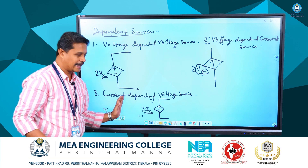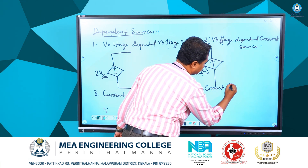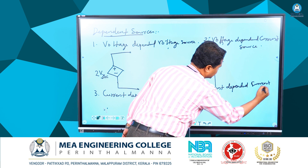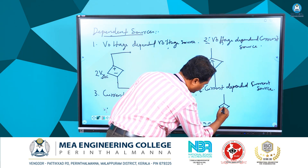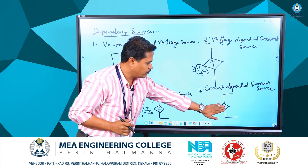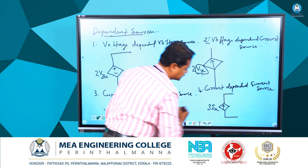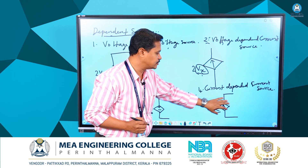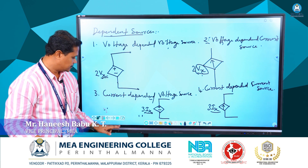The last type is a current dependent current source. It is a current source, represented by a diamond box with an arrow mark. This source is interconnected with all elements in the system, and its value — say 3Ix — is dependent upon a current Ix flowing somewhere in the network. When that current changes, the value of this current source will also change. These are the basic things you need to know for understanding circuits and networks.